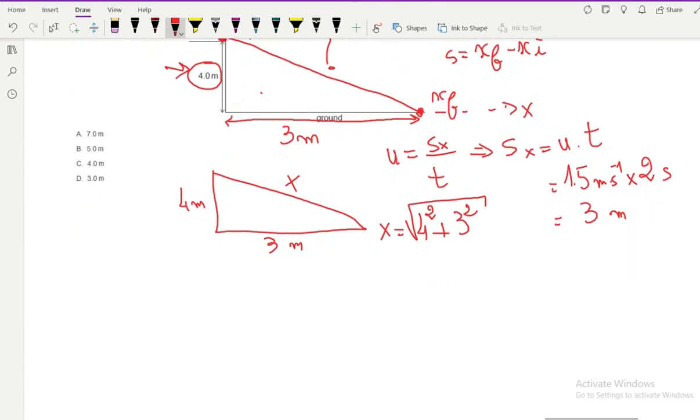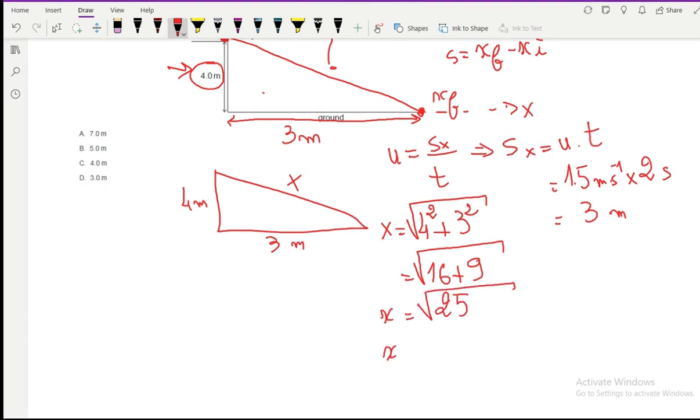So this is square root of 16 plus 9, so x equals 5. So the right answer must be B, Pythagorean theorem.